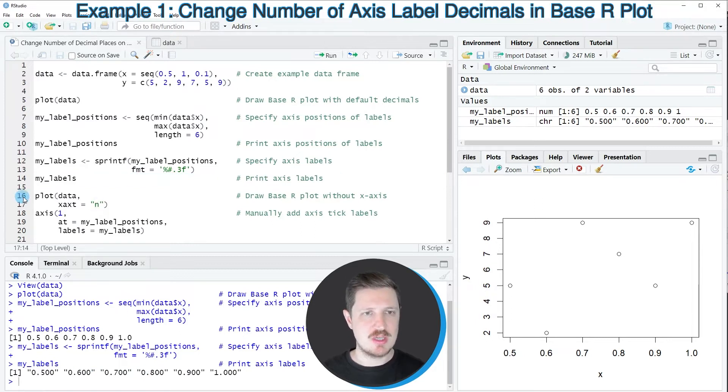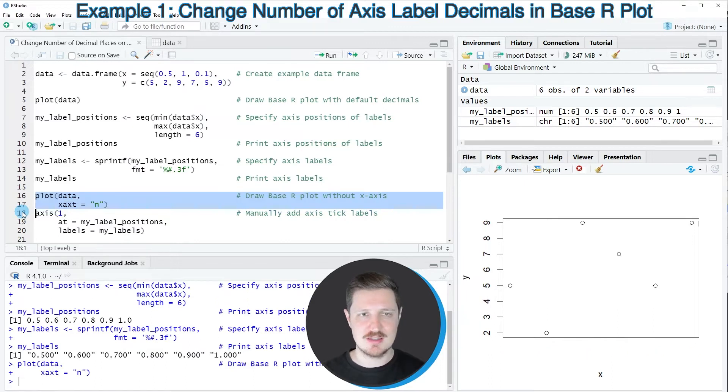Now in the next step, we can draw our data once again using the plot function. However, this time I'm specifying that I don't want to show an x-axis in our plot. So after running lines 16 and 17 of the code, you can see that the same plot is recreated. However, this time we have removed the x-axis labels.